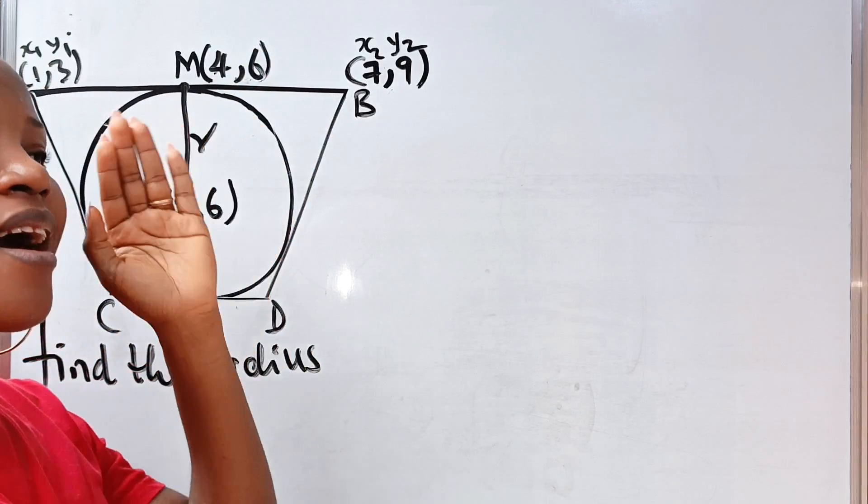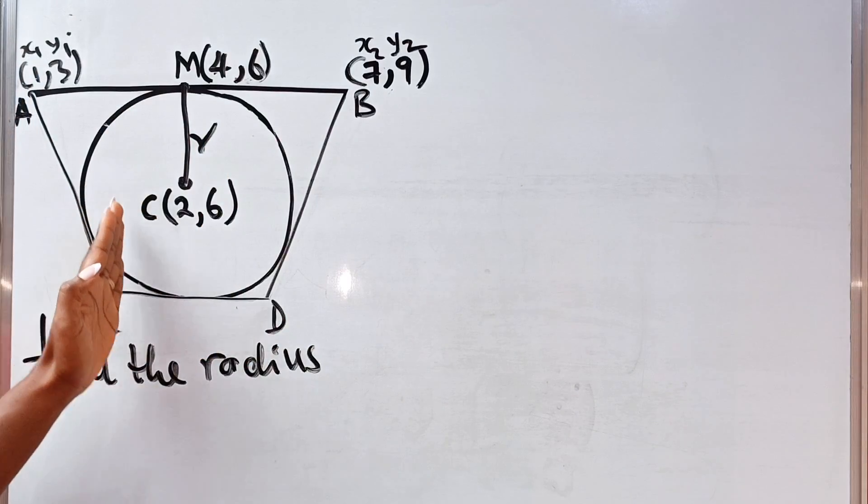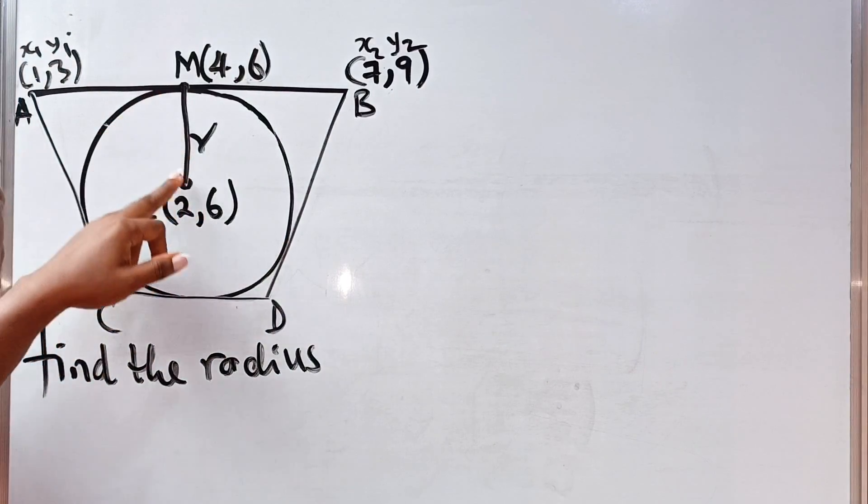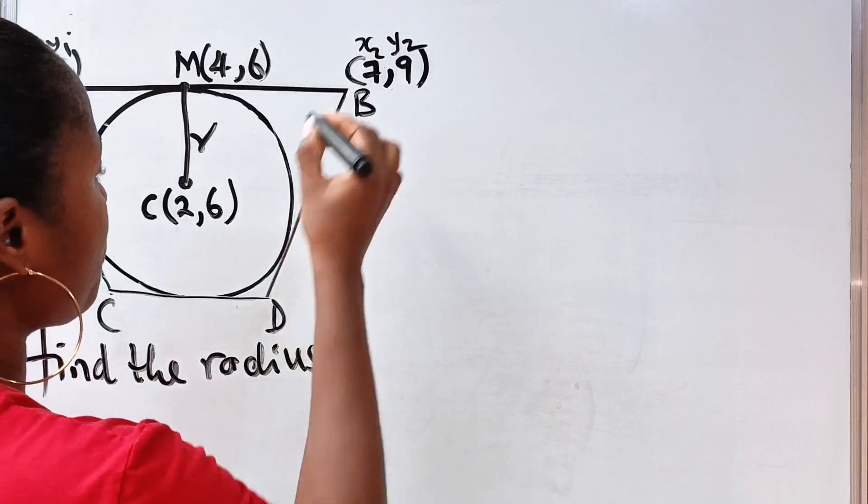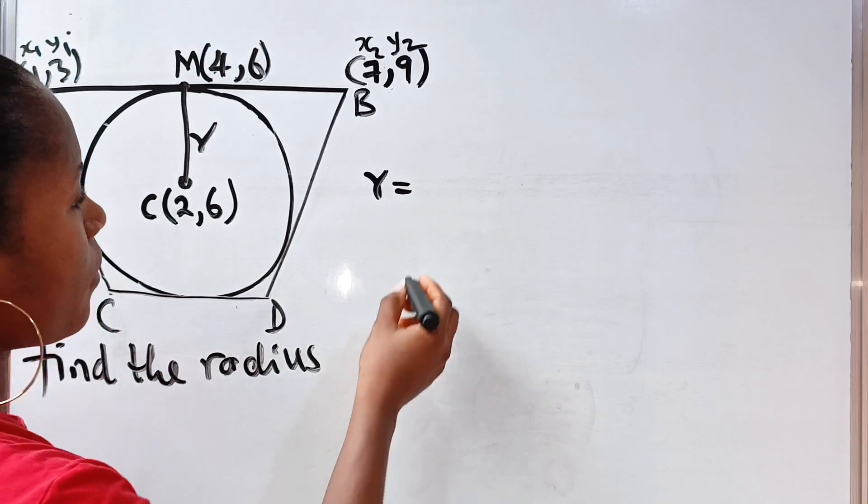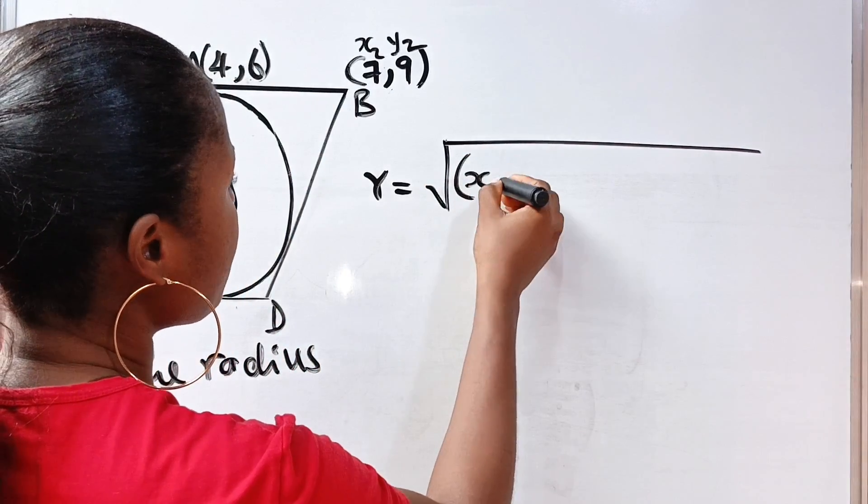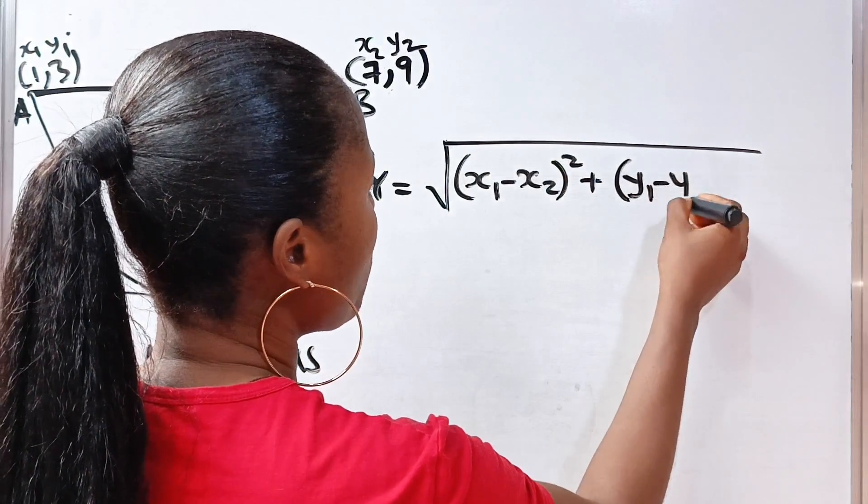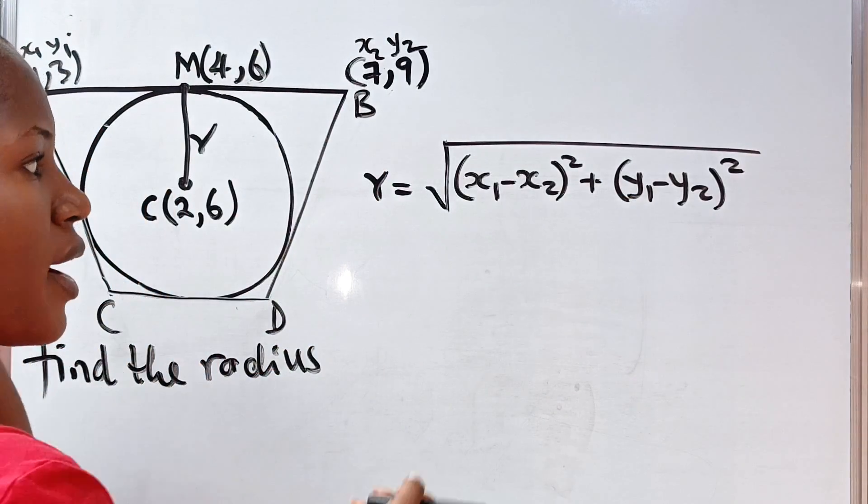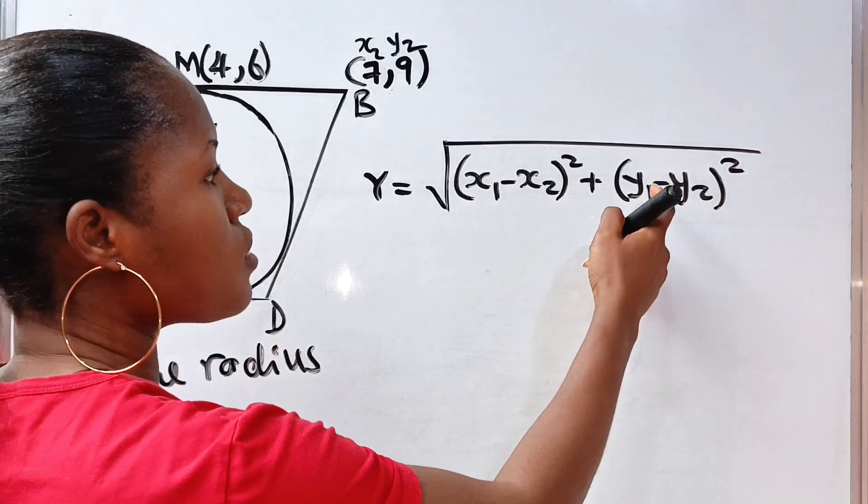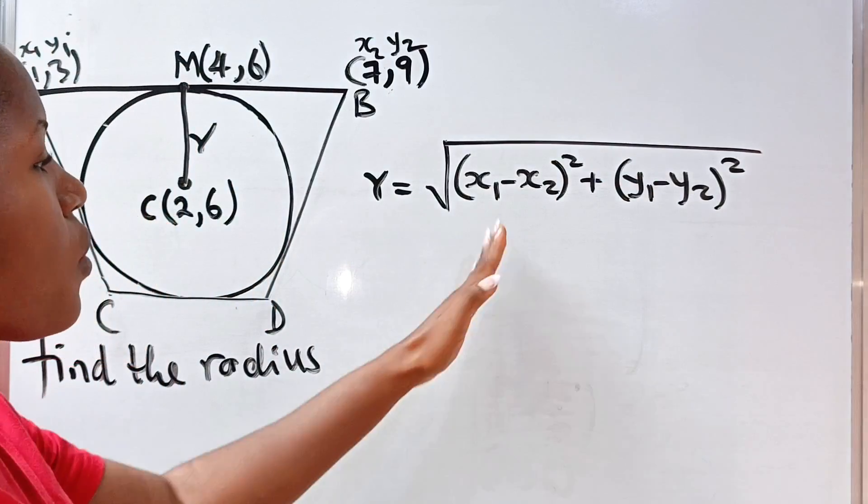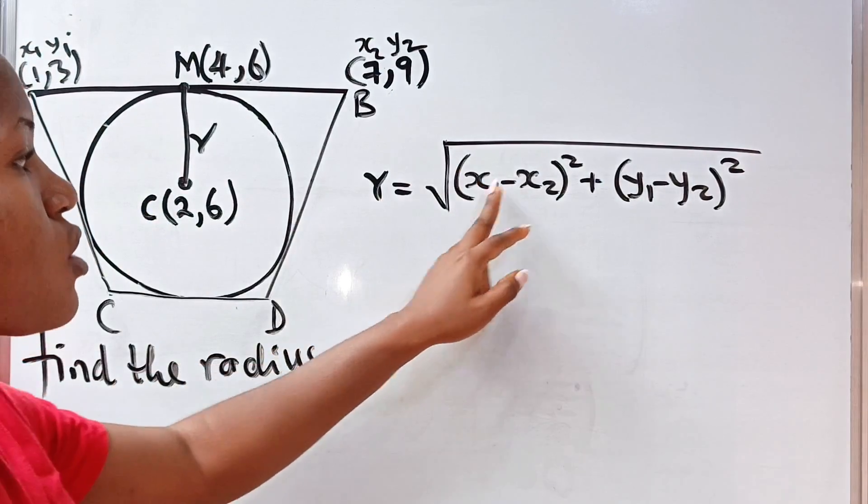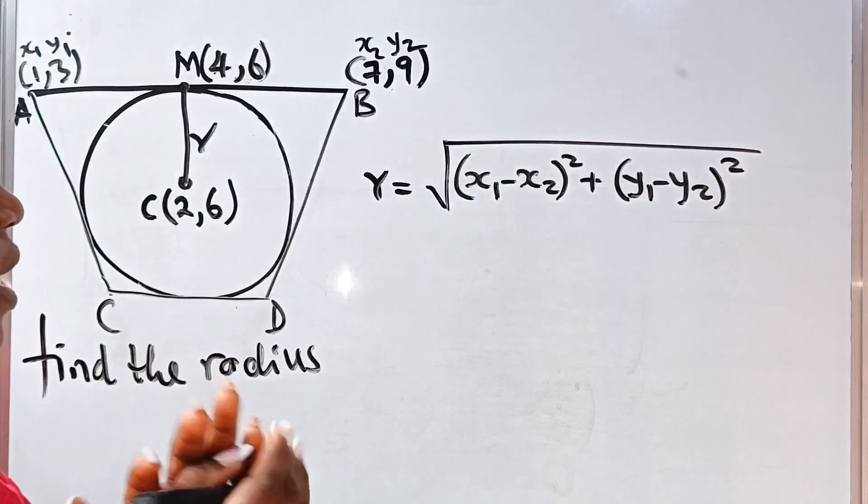Remember also this particular formula for you to get the distance between two points. Distance between two points, let's call this, we've already written it as R. The distance this time around is R, is equal to the square root of x1 minus x2 all squared plus y1 minus y2 all squared. Or you can say x2 minus x1 all squared plus y2 minus y1 all squared. So, anyone who wants to write, ensure you maintain the same way. If this is x1, then this should be y1. If this is x2, this should be y2 as well. Alright, so this is it.